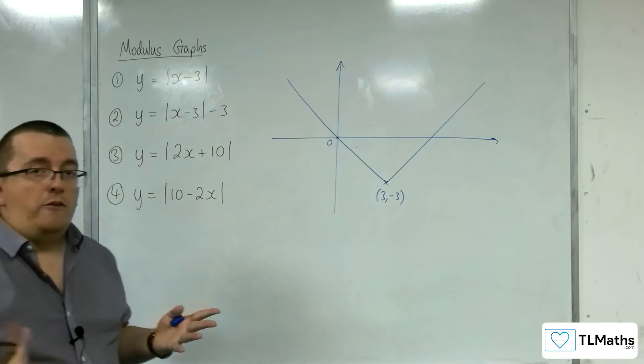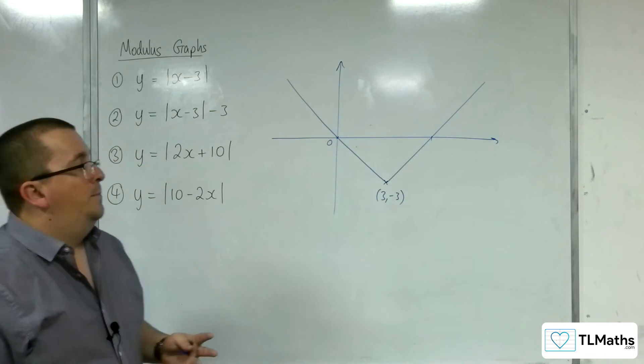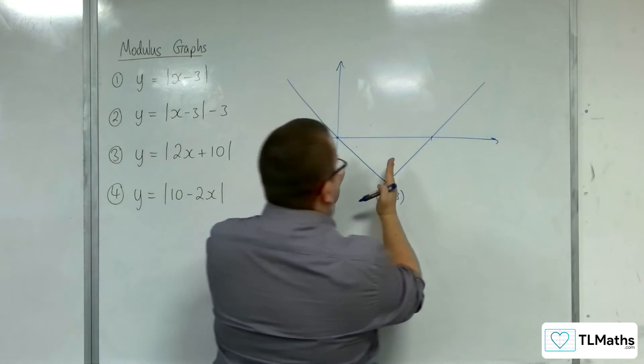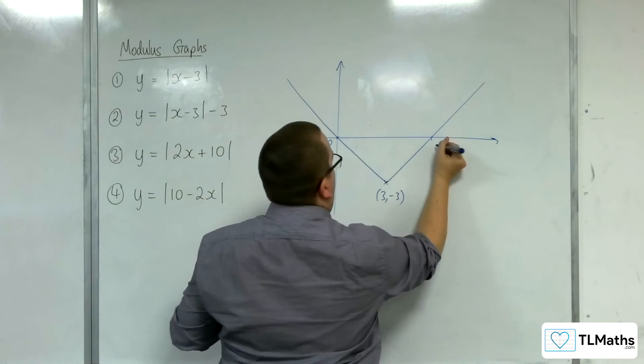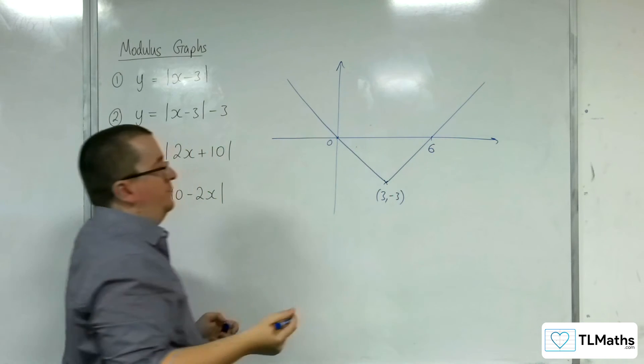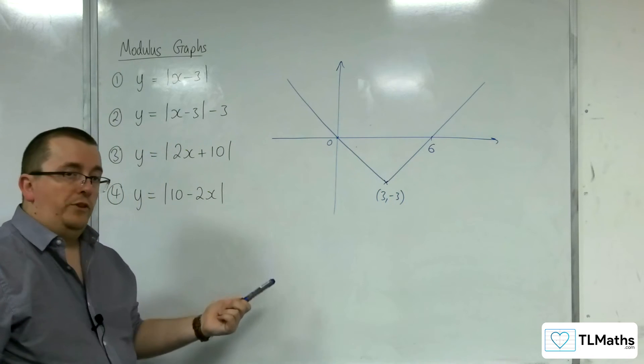Now, you might then be thinking, okay, well, where else does it cross the x-axis here? What's that point? Well, because of the symmetry of the graph, if that's 3 units, then that must also be 3 units. So that must be 6. And so that is my sketch of number 2.